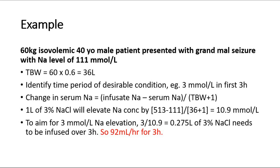Identify the time period of the desirable correction, for example 3 millimole per liter in the first 3 hours. Next, calculate the change in serum sodium using the formula. 3% sodium chloride provides 513 millimole of sodium, so infusate sodium is 513. Serum sodium in this scenario is 111, and total body water is 36 liters. So 1 liter of 3% sodium chloride will elevate sodium concentration by 10.9 millimole per liter.